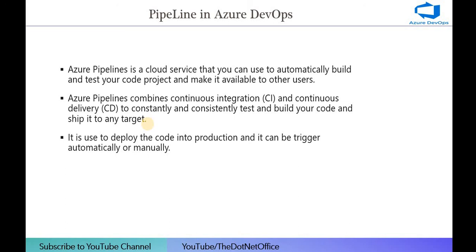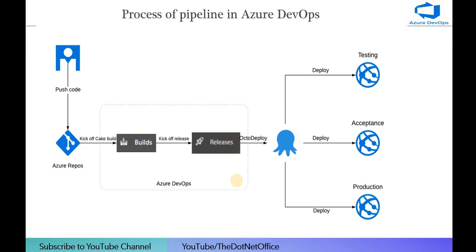What is the pipeline in Azure DevOps? Azure Pipeline is a cloud service that you can use to automatically build and test your code project and make it available to other users. The pipeline takes code from the repository, builds it, and then allows changes into the production or testing environment. Azure Pipeline combines continuous integration and continuous delivery to consistently test and build code and ship it to a particular target such as production or testing.